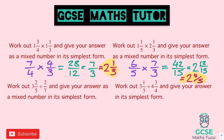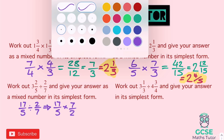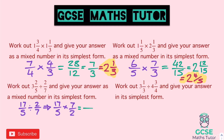Now dividing questions — one extra step with keep, flip, change. Three and two fifths divided by two sevenths. Top-heavy: 17 fifths divided by two sevenths. Keep 17 over 5, flip to seven over two, multiply. Top: 17 times seven — seven times ten is 70, seven times seven is 49, total 119. Bottom: two times five is 10. So 119 over 10. 10 goes into 119 eleven times — up to 110 — with a remainder of nine. Final answer: eleven and nine tenths.